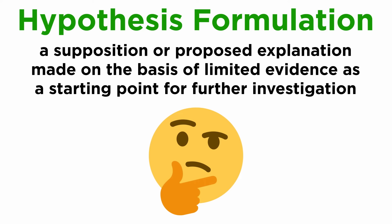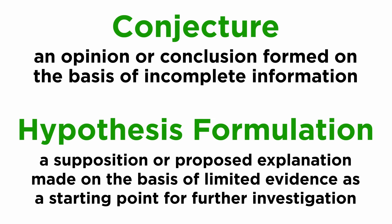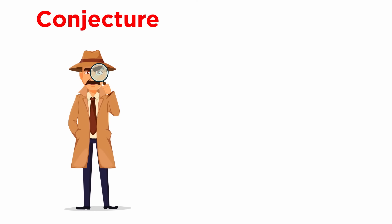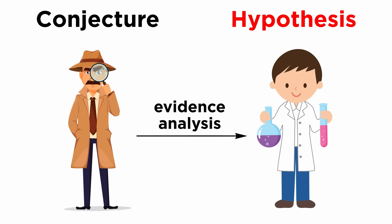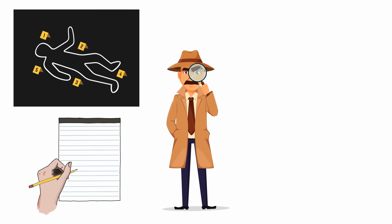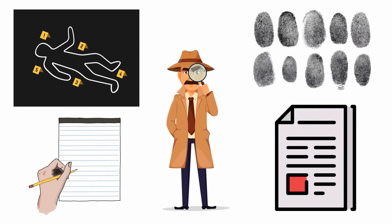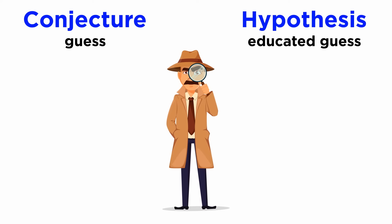The third stage of CSR is hypothesis formulation. A hypothesis can be defined as a supposition or proposed explanation made on the basis of limited evidence as a starting point for further investigation. This sounds very similar to conjecture — both involve making assumptions. However, there is one fundamental difference: while conjecture is formed before submitting the evidence to the laboratory, a hypothesis is formulated after the preliminary results of the evidence analysis are obtained. The investigator revisits the scene, reviews all documentation, studies similar cases, and makes an assumption about the crime. Therefore, if conjecture is simply a guess, a hypothesis is an educated guess about the possible sequence of events of the crime.